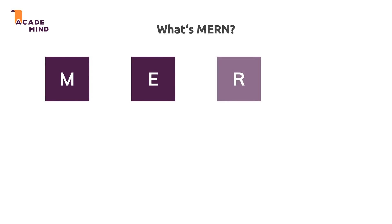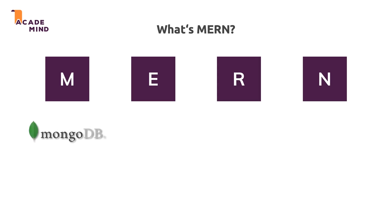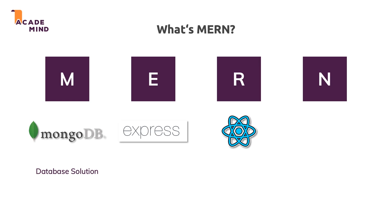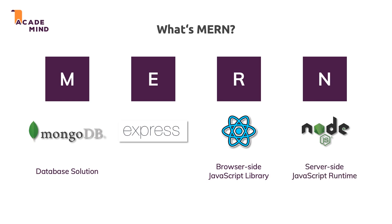What does MERN stand for? The M stands for MongoDB, a database solution. The E stands for Express.js, the R stands for React.js, which is a browser-side JavaScript library that helps us build amazing user interfaces. The N stands for Node.js, a server-side JavaScript runtime where JavaScript code can be executed outside of the browser. Express.js is a framework for Node.js that makes building Node.js applications easier.